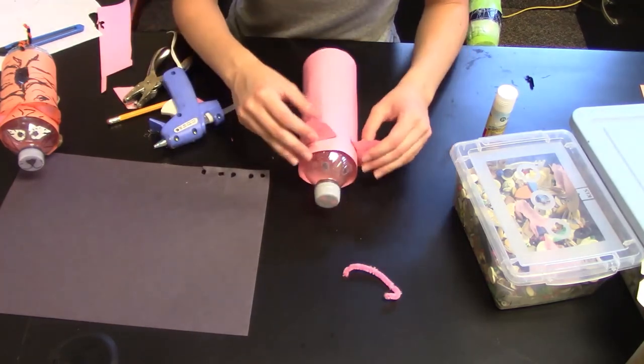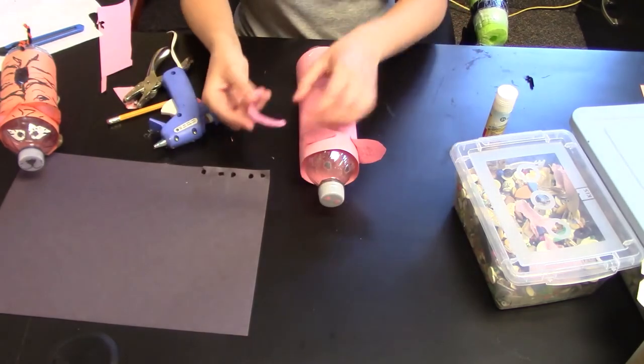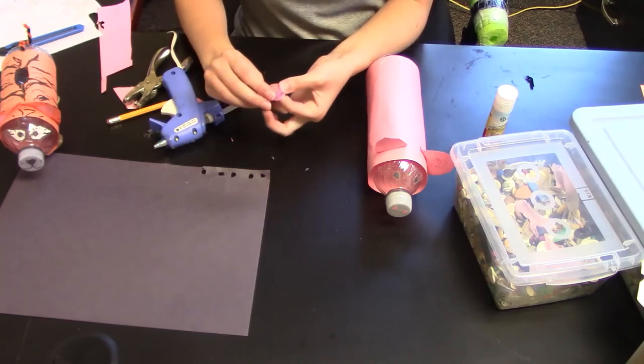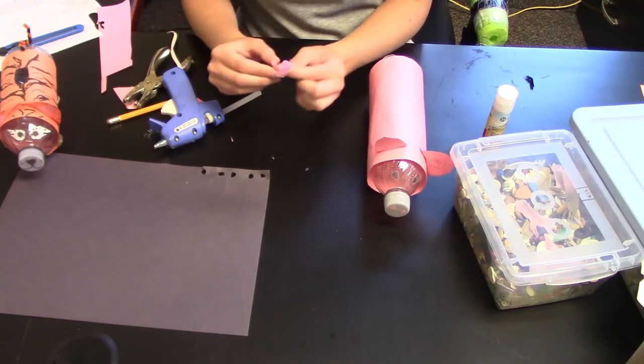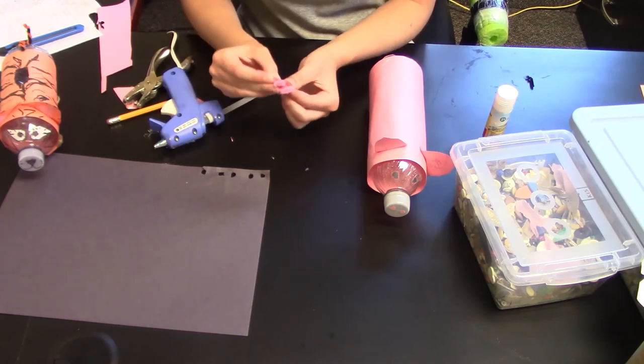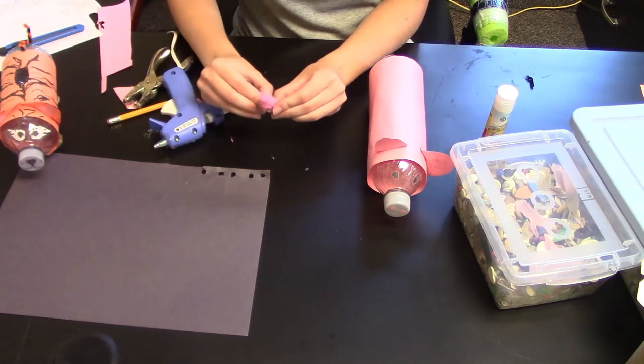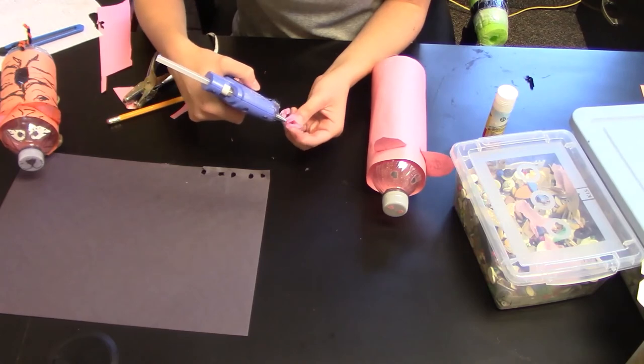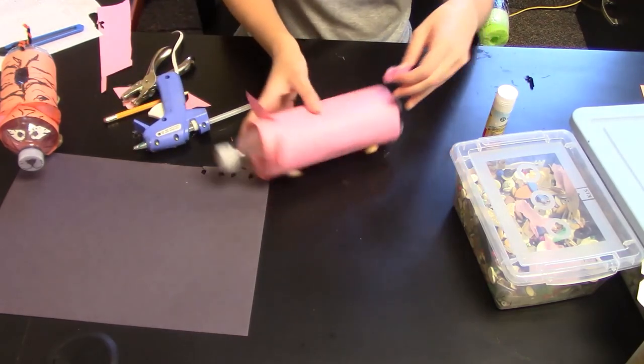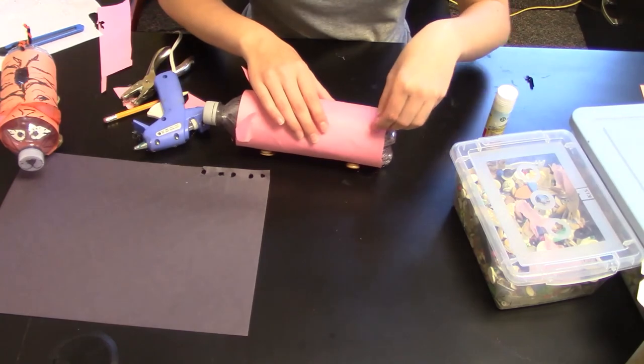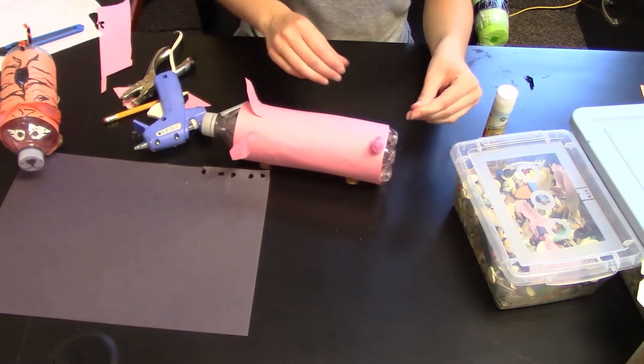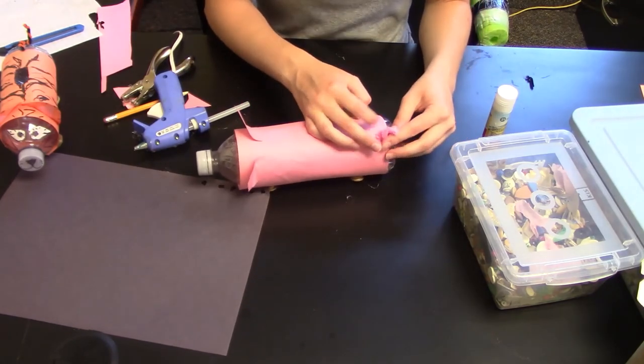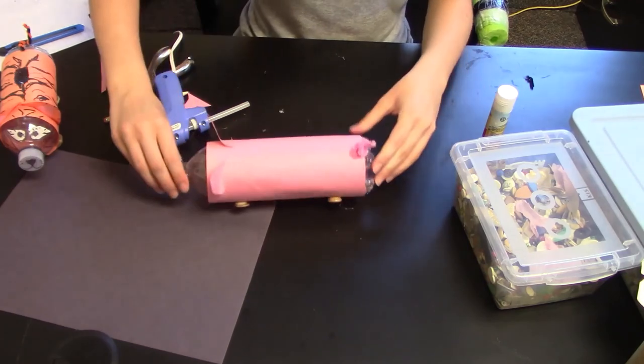So now we have the pig. It's a little lopsided. We'll glue on his tail. To curl the tail, just wrap it around your finger or a pen or marker. And then just a curly tail. Then we'll take the end of the pipe cleaner and put some glue on. We'll glue this tail on. And there's a curly tail.